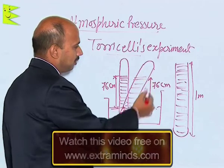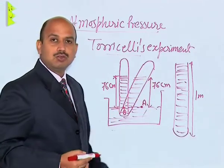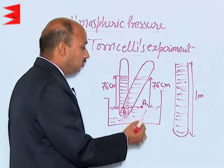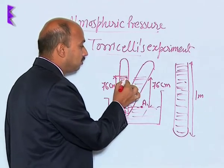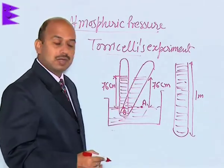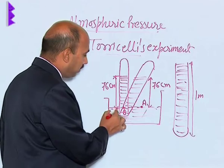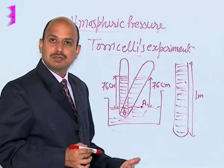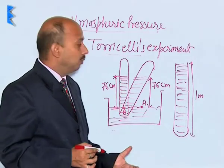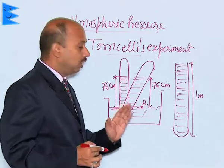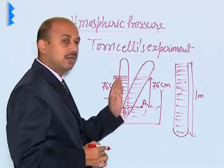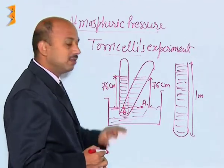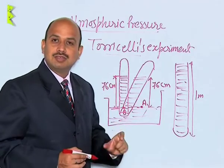If you tilt this tube, there is no difference in the height of the mercury. Whenever the mercury level goes down, the height of the mercury column above the liquid surface is 76 centimeters. Whether you incline this tube or place it straight, every time you will find the height of this mercury column is 76 centimeters.